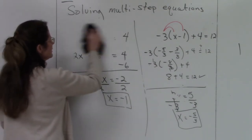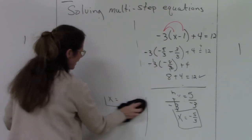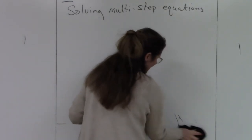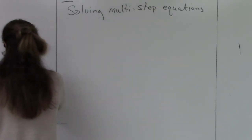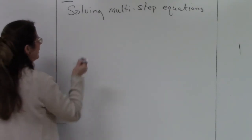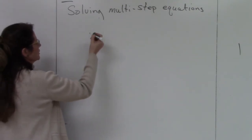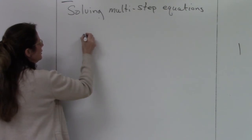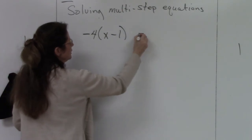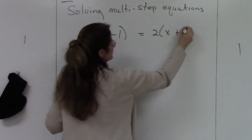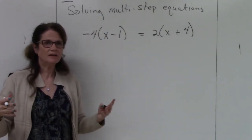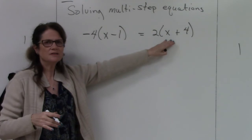Let's try a couple more, adding more layers. A multi-step equation is all about adding layers, but it will always reduce back to a two-step and then a one-step equation. Getting a fraction answer is completely okay. Here we go: negative 4 times (x minus 1) equals 2 times (x plus 4).